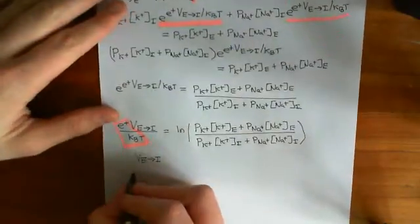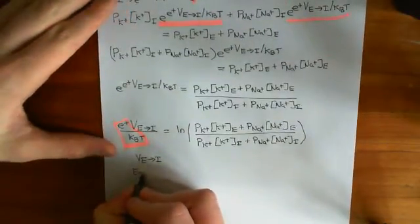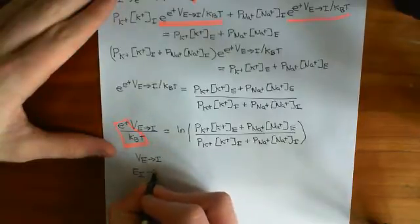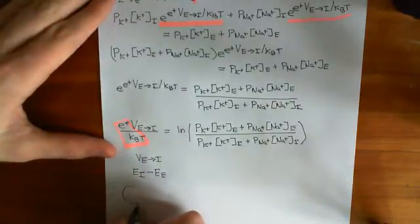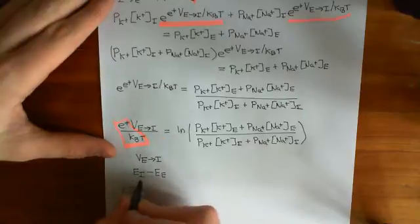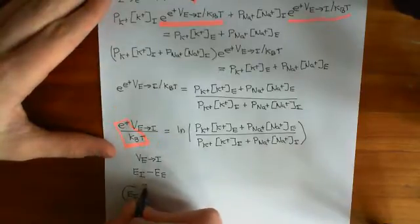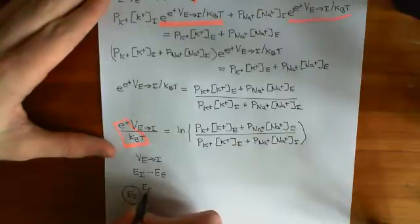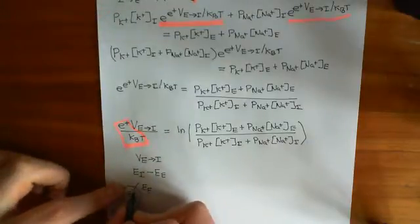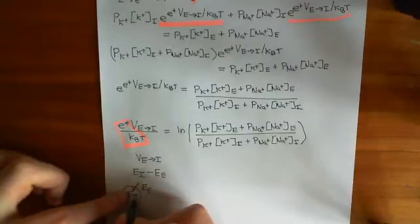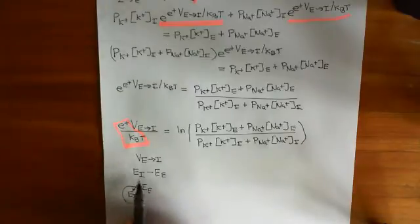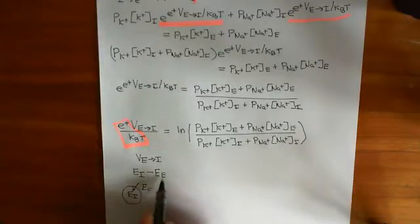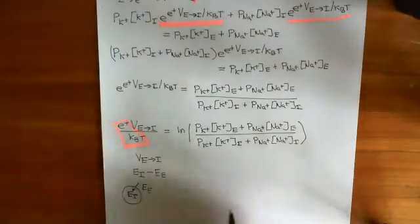That voltage is from the extracellular compartment to the intracellular compartment. Remember what that means: it's the electrical potential in the intracellular compartment minus the electrical potential in the extracellular compartment. If I draw a cell — here's the intracellular compartment with potential E_I, and outside is E_E — going from outside to inside, what is the difference in electrical potential? The inside ends up more negative than the outside, so you get something like minus 65 millivolts.